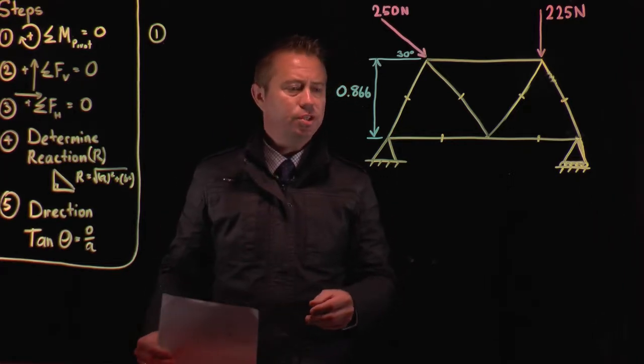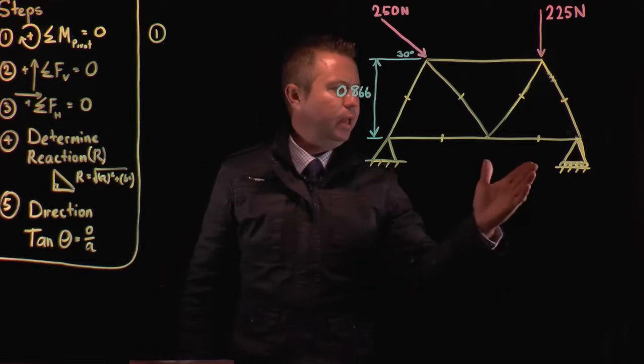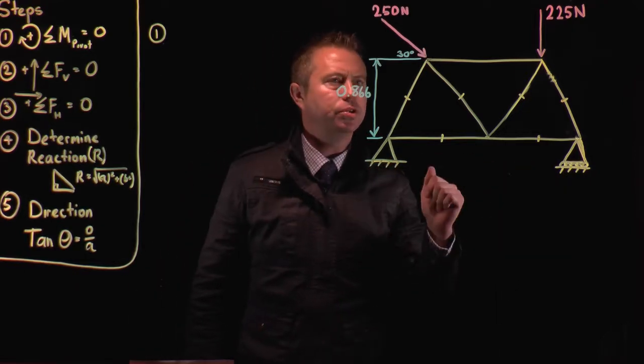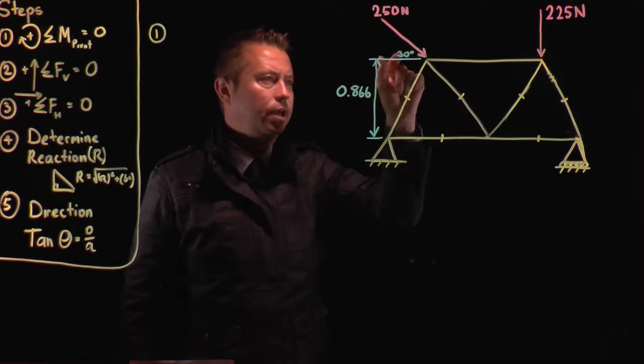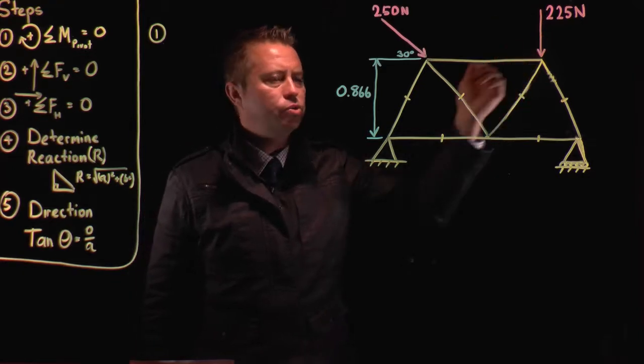We need to find the reactions at both the supports. So we have our pivot joint and our roller joint. The question has 250 newtons coming down at an angle of 30 degrees and 225.